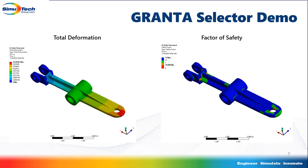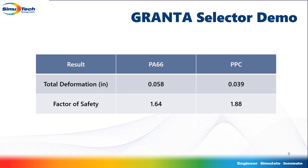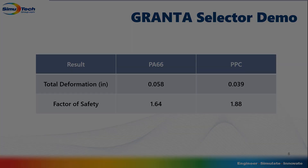The results for the simulation with PPC used as the material instead of PA-66 are shown here. As you can see, there is less deformation and a higher factor of safety than with PA-66. This table summarizes the differences between the two materials. From these results, we can determine that PPC is a suitable replacement for PA-66. This concludes this video covering the Granta Selector. Thank you for watching.